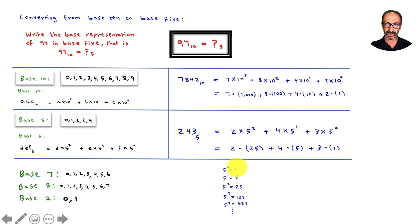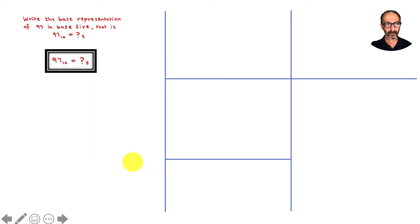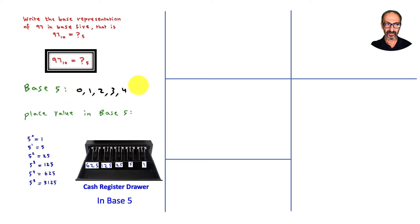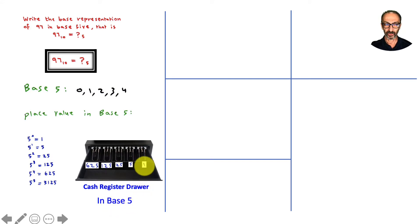In base 5, we count ones, fives, 25s, 125s, 625s, and so on. Back to the problem: how do we write 97 base 10 in base 5? In base 5 we have 0, 1, 2, 3, 4. The place values are 5 to the 0, 5 to the 1, 5 to the 2, 5 to the 3, 5 to the 4, and so on. Think of it like a cash register drawer in base 5 — it holds ones, fives, 25s, 125s, and 625s.